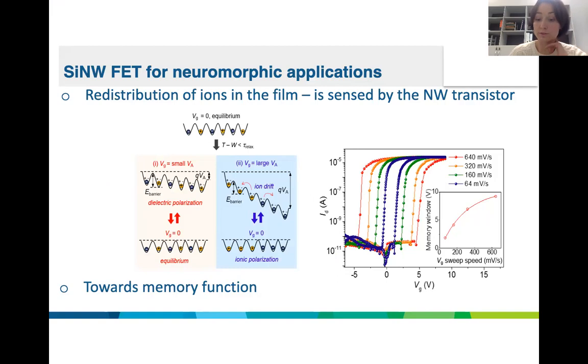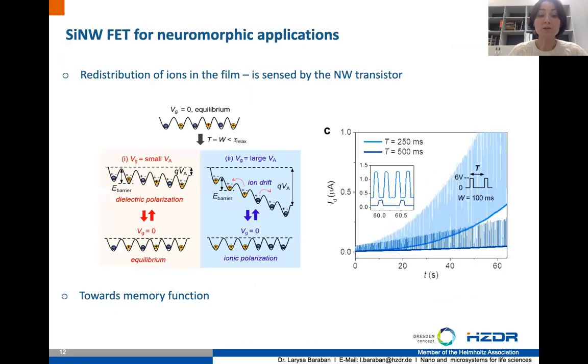This is reflected in the transfer curves of the devices shown in the right-hand side of the plot, where we see that depending on the speed of sweeping of the gate voltage, there is a different opening of the transfer curve here. That means there is strong polarization within the film that can be achieved, and that is immediately reflected in the transfer characteristics. Basically the ions can be redistributed within the film and they can be even stored there.